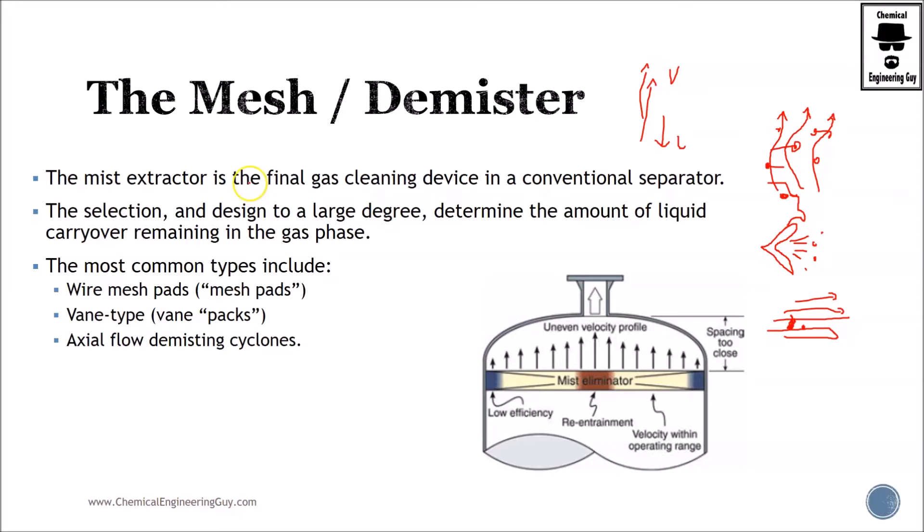The demister ensures that the mist extractor is the final gas cleaning device in the flash drum. The selection and design typically depend on determining the amount of liquid carryover remaining in the gas phase.